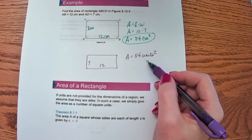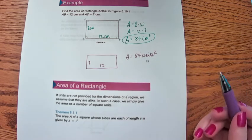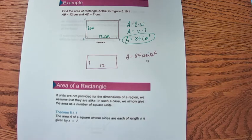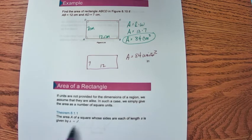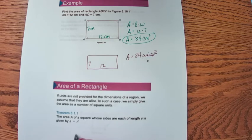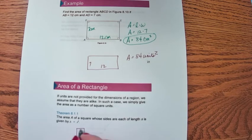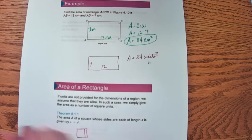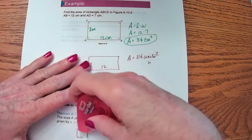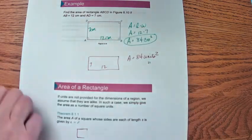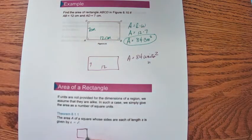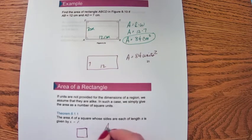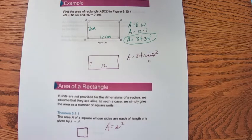Here's our next formula: the area of a square. A square is a rectangle where all the sides are congruent. So length times width would be side times side. The area of a square is side squared — side times side.